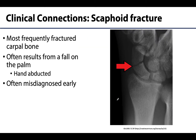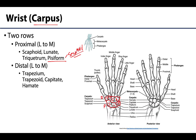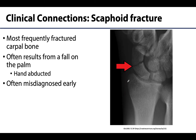The most frequently fractured carpal bone is the scaphoid, which is the lateral-most bone in the proximal row, closely articulating with the radius. You can see in this radiograph a clear fracture in the middle region of the scaphoid. This often happens with falls on an outstretched hand where the palm is facing out and the hand may be slightly abducted.